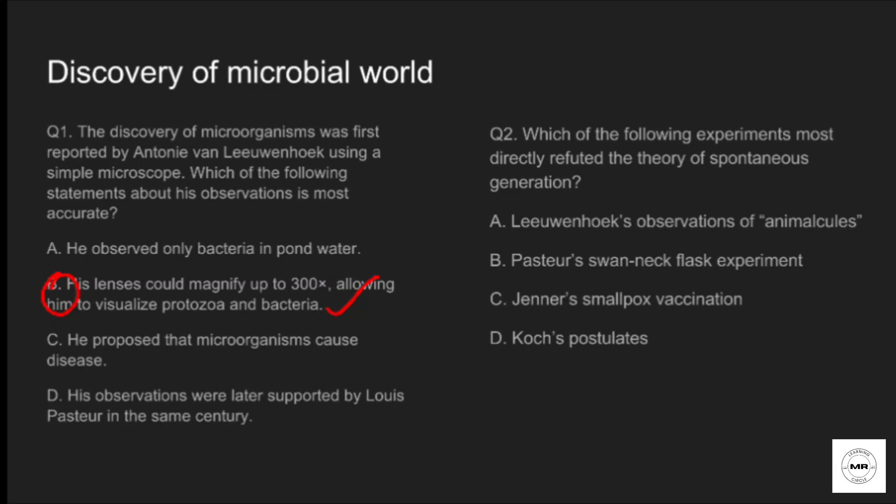Leeuwenhoek's simple microscope achieved up to 3000 times magnification. He observed bacteria, protozoa, and sperm cells. He did not propose the germ theory. Now we have question number two.